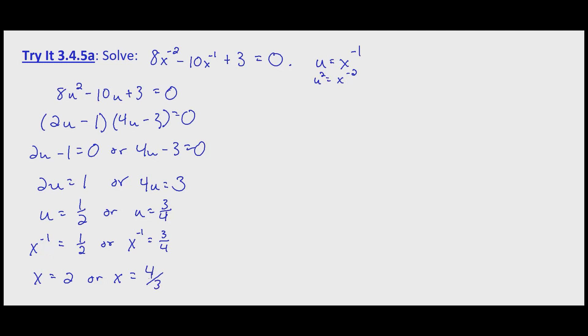Now as usual we'll check our solutions by substituting back into the original equations. In this case we'll start with the smaller of the two, x equals 4 thirds. So with x equals 4 thirds we have 8 times 4 thirds to the negative 2 minus 10 times 4 thirds to the negative 1 plus 3 equals 0. Does it equal 0? That's what the question mark is for.